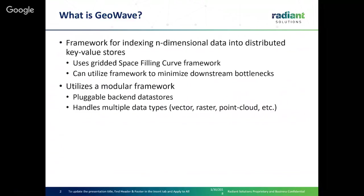From the very beginning we've been very particular about making sure GeoWave is modular. The backend data stores are all pluggable. Currently you can use HBase, Accumulo, and Bigtable. We're in the middle of implementing DynamoDB — there's actually a branch out there if you want to play with it, and hopefully in the first quarter of 2018 we'll have that available for users. Same thing for data types: we natively handle vector and raster data, point cloud data through PDAL, and anything you can use through GeoTools since we're natively integrated with GeoTools.